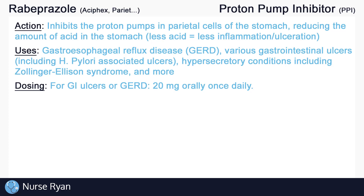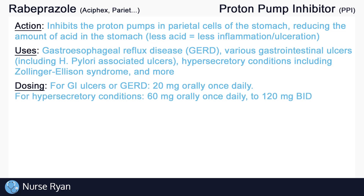Typical dosing for Rabeprazole in adults is as follows. For gastrointestinal ulcers and GERD, Rabeprazole is often ordered at 20 mg orally once a day. For hypersecretory conditions, dosing can be much higher. Initial dosing may start at 60 mg once a day, and may be increased to about 120 mg two times a day, or BID.